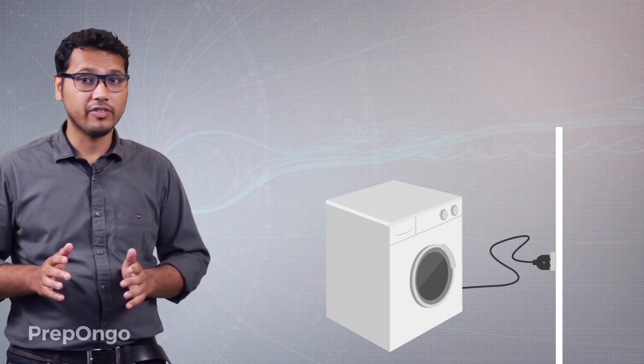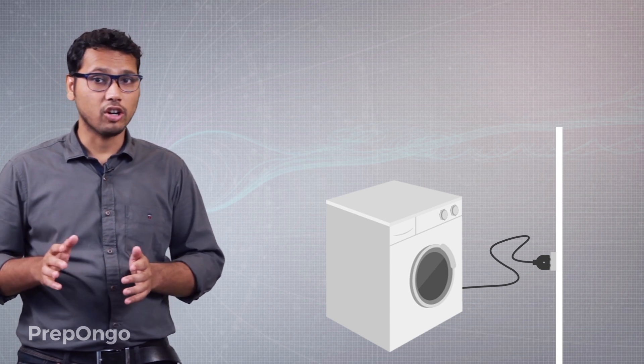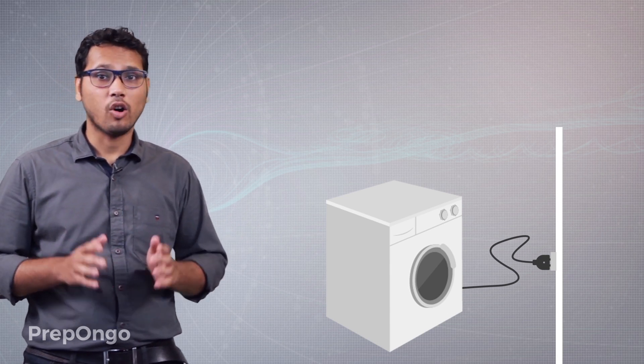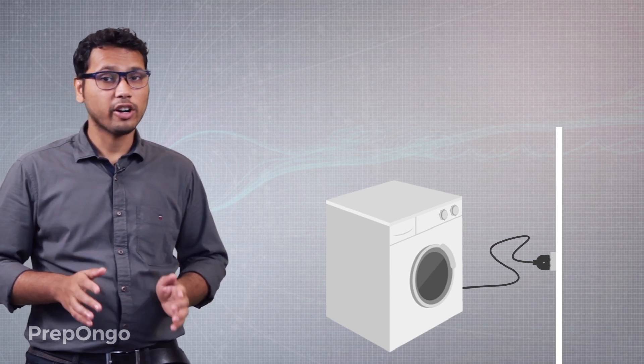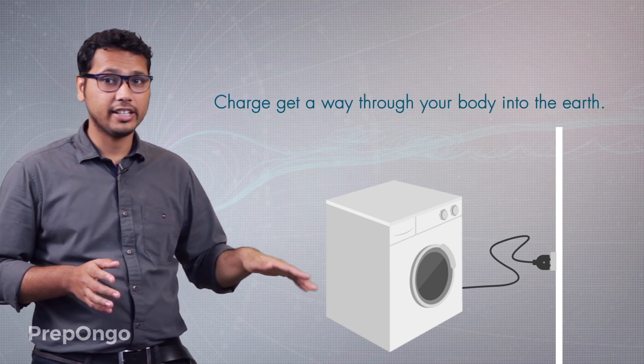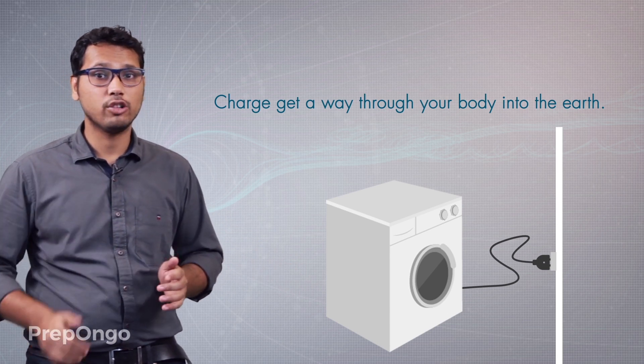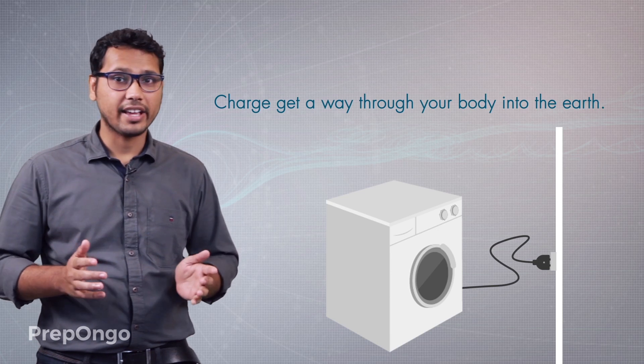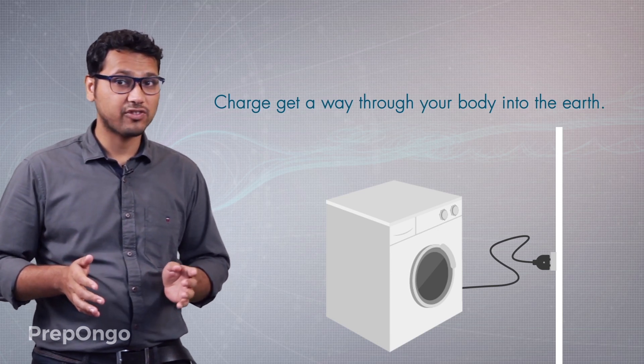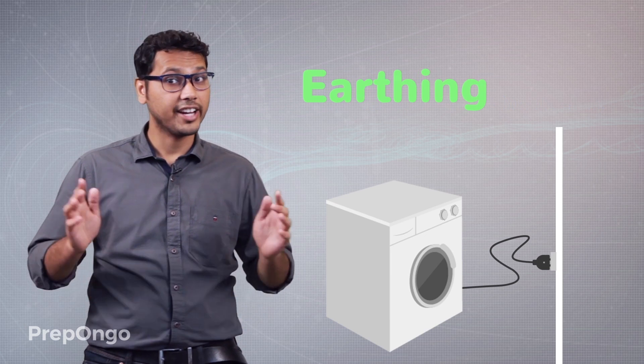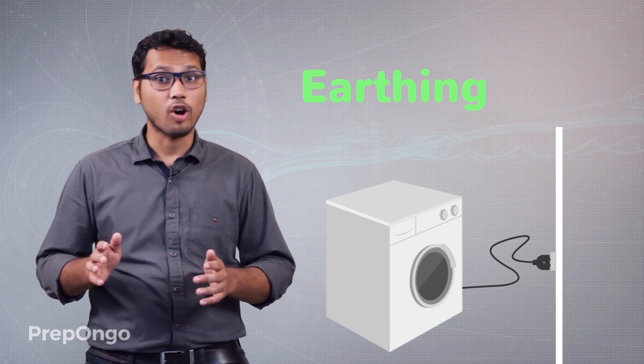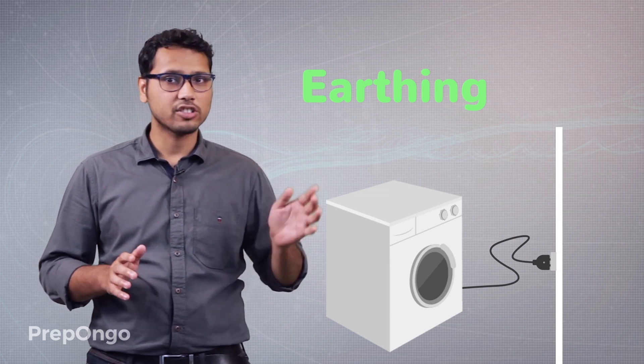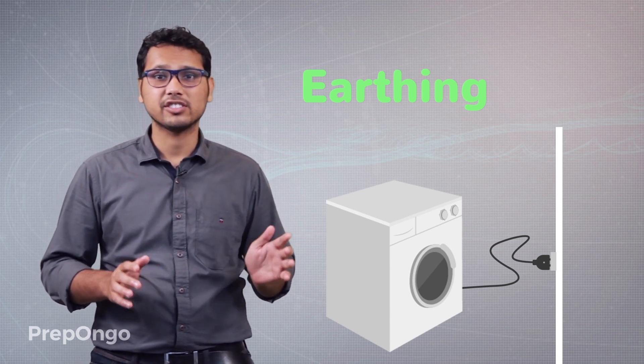Now this doesn't happen when you are wearing shoes or standing on a wooden stool. It only happens when you are on your naked foot. So the charge can flow into the earth. Your body acts like a conductor and charge flows through your body. Now you will not get an electric shock if current has an alternative way to flow into the earth or it is not stored on the metallic surface of that appliance.